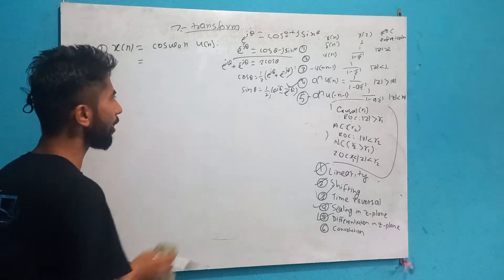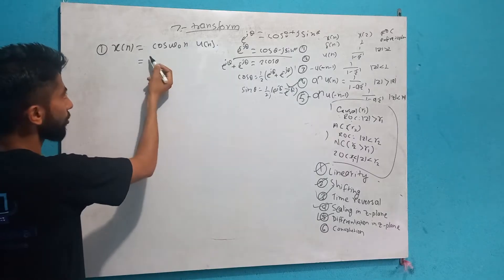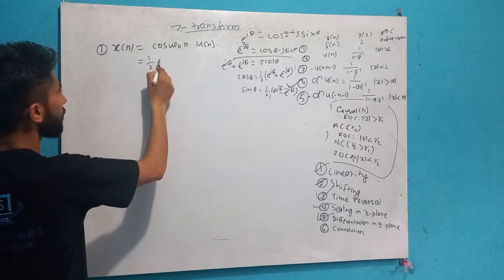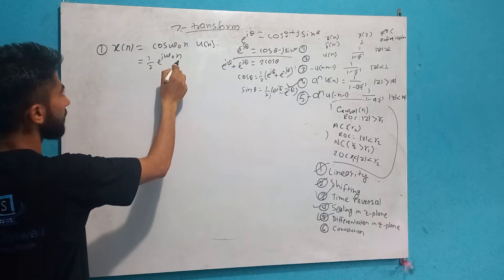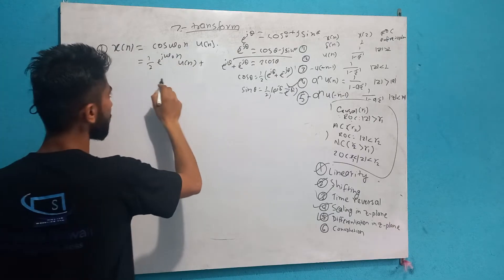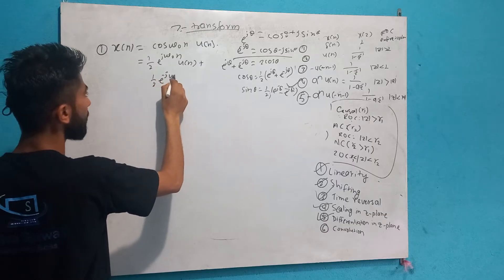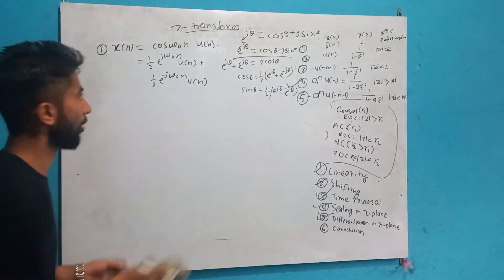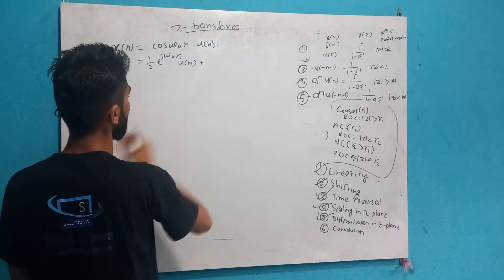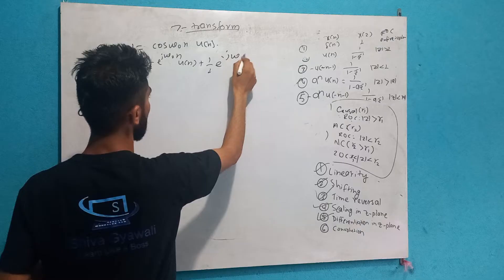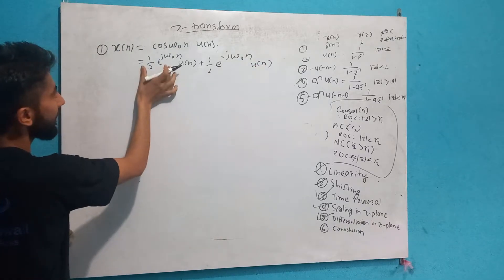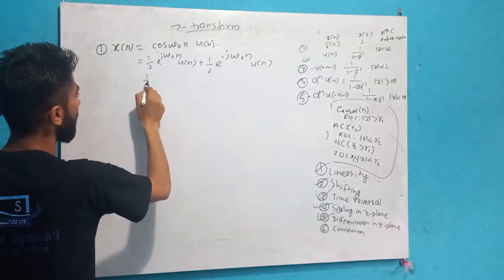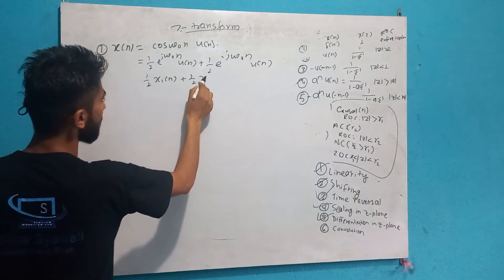Now we are writing cos θ. Let's write this: 1 by 2, e to the power j ω₀, u(n), plus 1 by 2, e to the power minus j ω₀, u(n). I am going to write and multiply this. 1 by 2, e to the power minus j ω₀, u(n). Now we are doing this with a1, a2 terms.